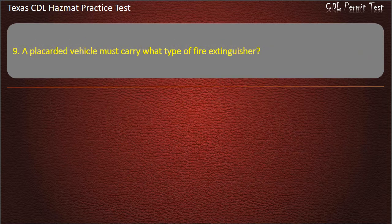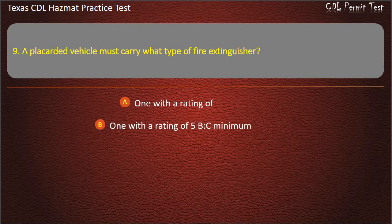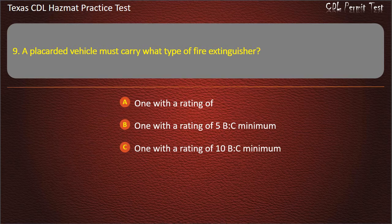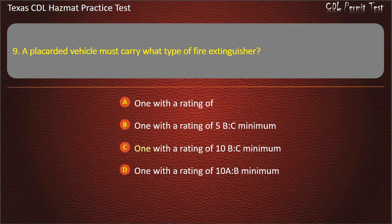Question 9: A placarded vehicle must carry what type of fire extinguisher? One with a rating of 5 BC minimum. One with a rating of 10 BC minimum. One with a rating of 10 AB minimum. Answer: One with a rating of 10 BC minimum.